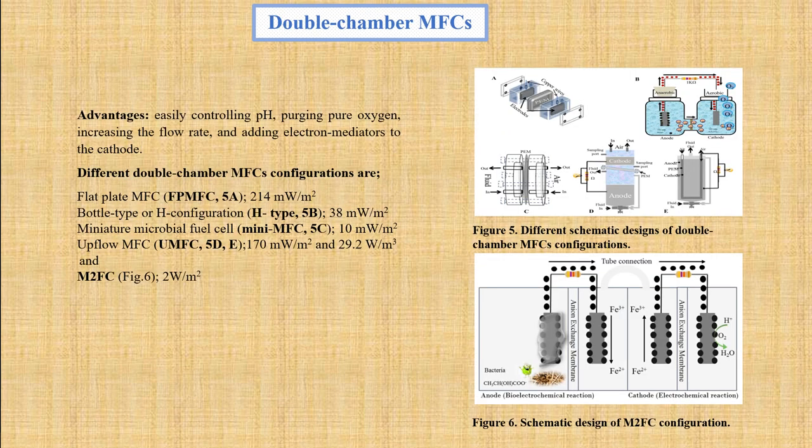The double-chamber microbial fuel cell, as shown in Figures 5 and 6, usually consists of an anodic chamber and a cathodic chamber separated by a membrane. The flat-plate microbial fuel cell (Figure 5A) generated 14 times more power compared to bottle-type or H-configuration (Figure 5B), whereas a miniature microbial fuel cell (Figure 5C) produced only 10 mW/m². A proposed new design named M2FC (Figure 6) yielded a power density over 20 times higher than the air cathode-based microbial fuel cell system. The major advantage of the double-chamber design is that cathode performance can be improved by controlling pH, purging pure oxygen, increasing flow rate, and adding electron mediators.